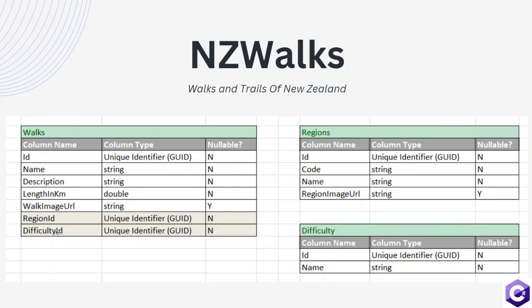Now that we have information about what we are wanting to build, let's go back to the API and create the domain models for our application.